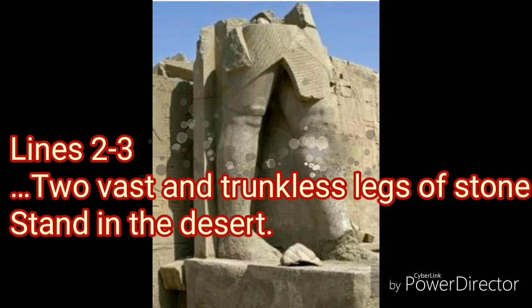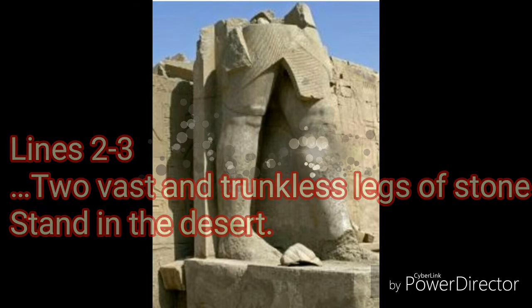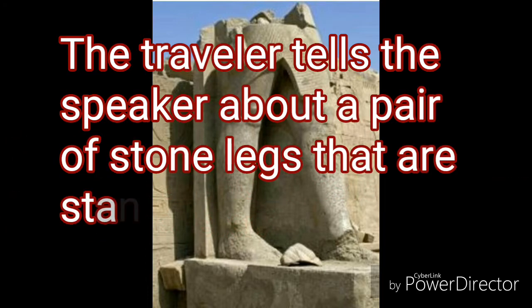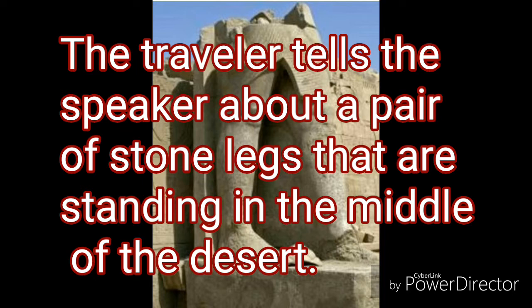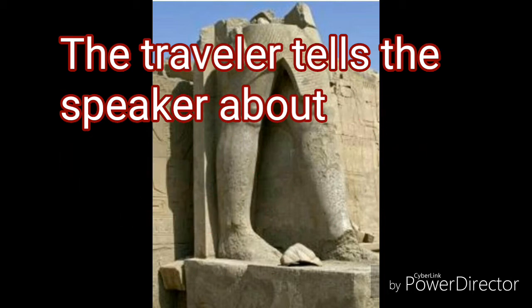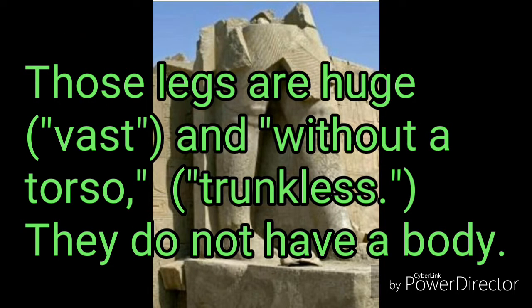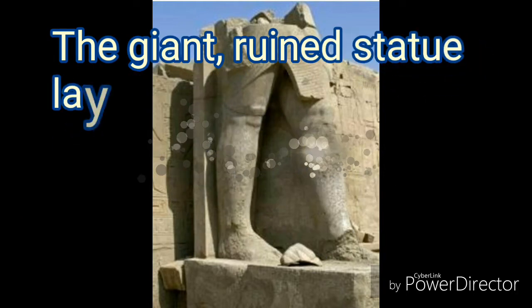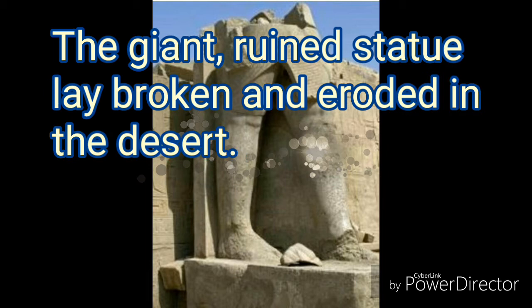'Two vast and trunkless legs of stone stand in the desert.' The traveller tells the speaker about a pair of stone legs standing in the middle of the desert. Those legs are huge — expressed by the word 'vast' — and without a torso — expressed by the word 'trunkless,' meaning they do not have a body. The giant ruined statue lay broken and eroded in the desert.